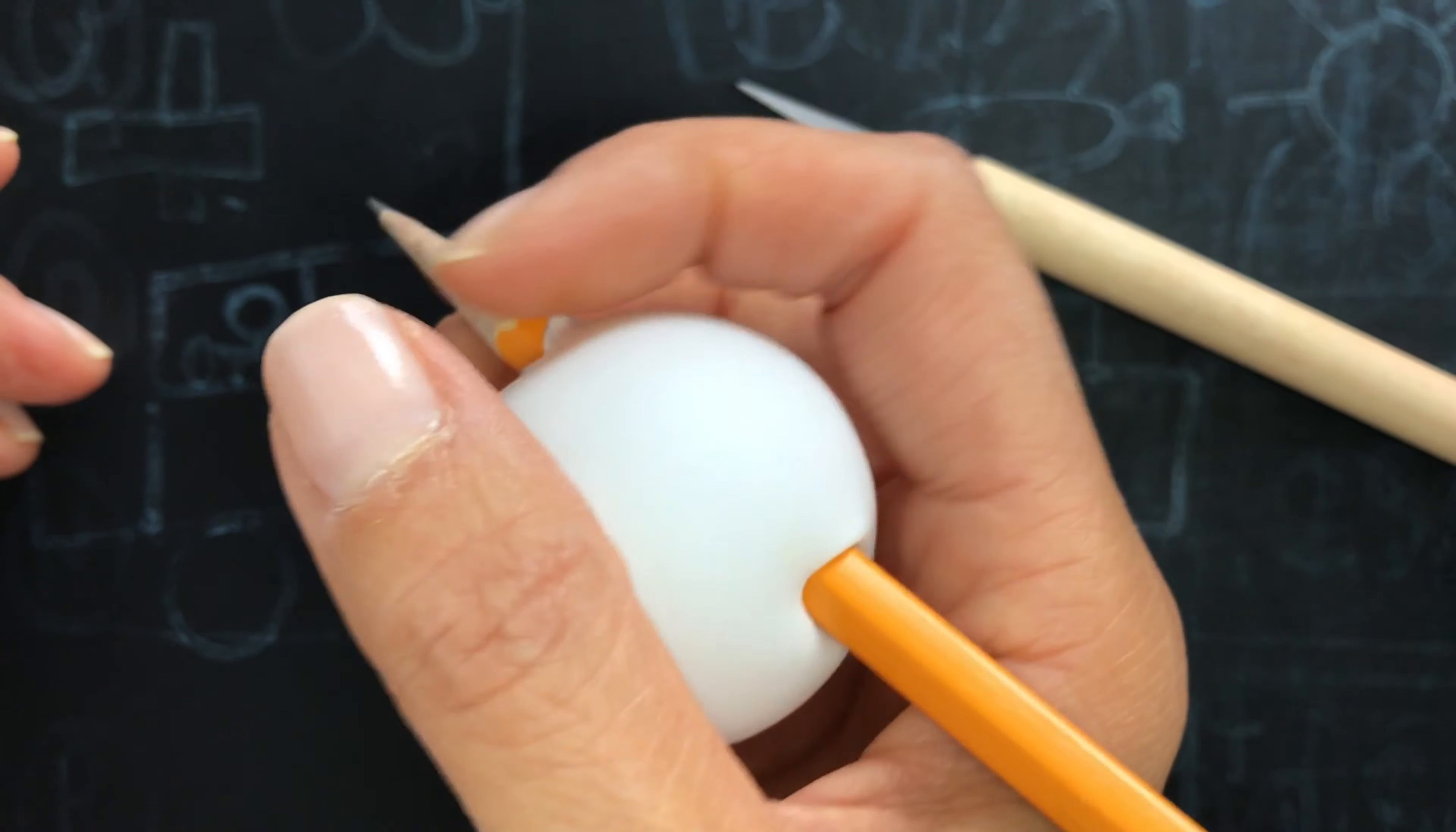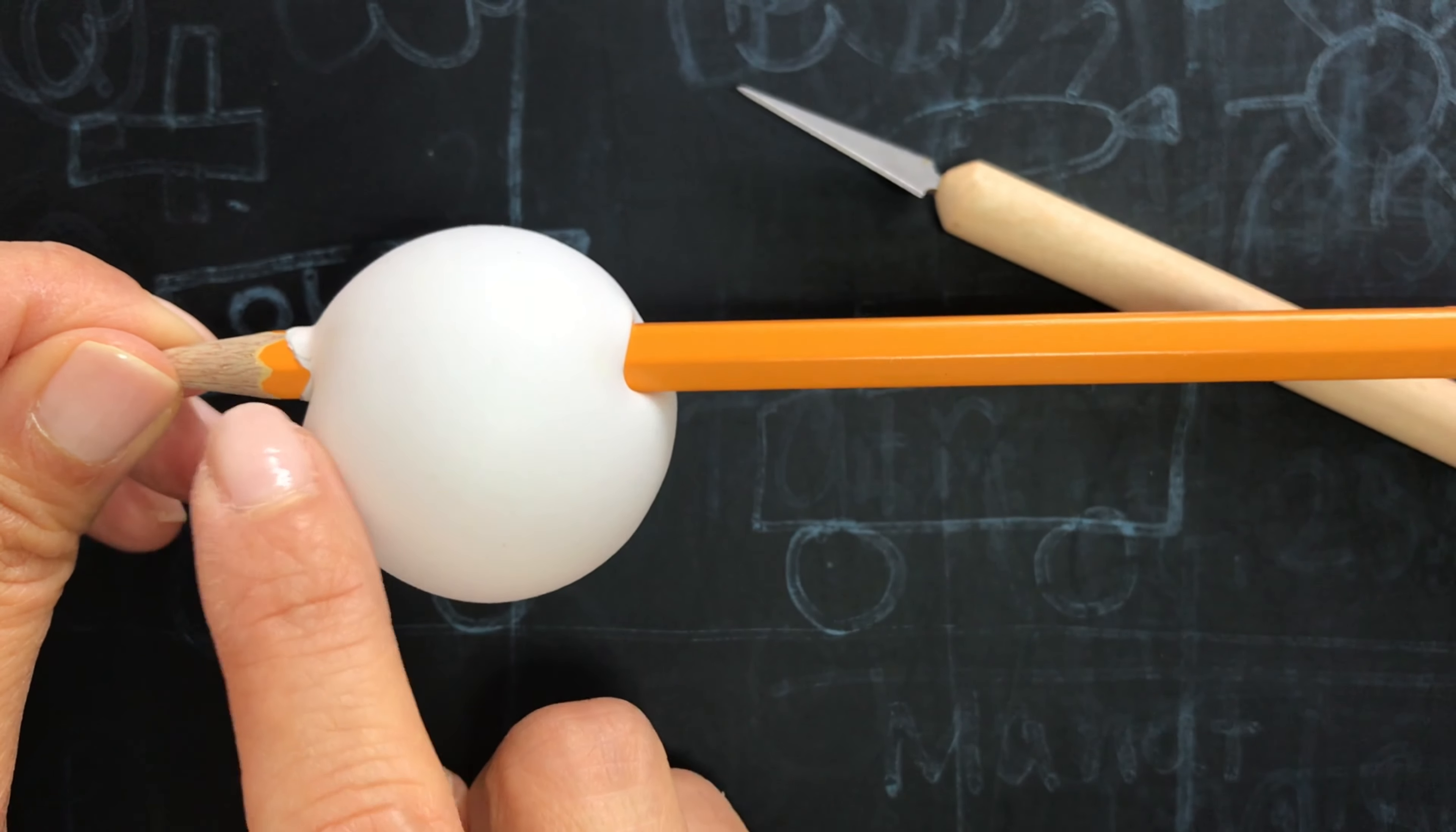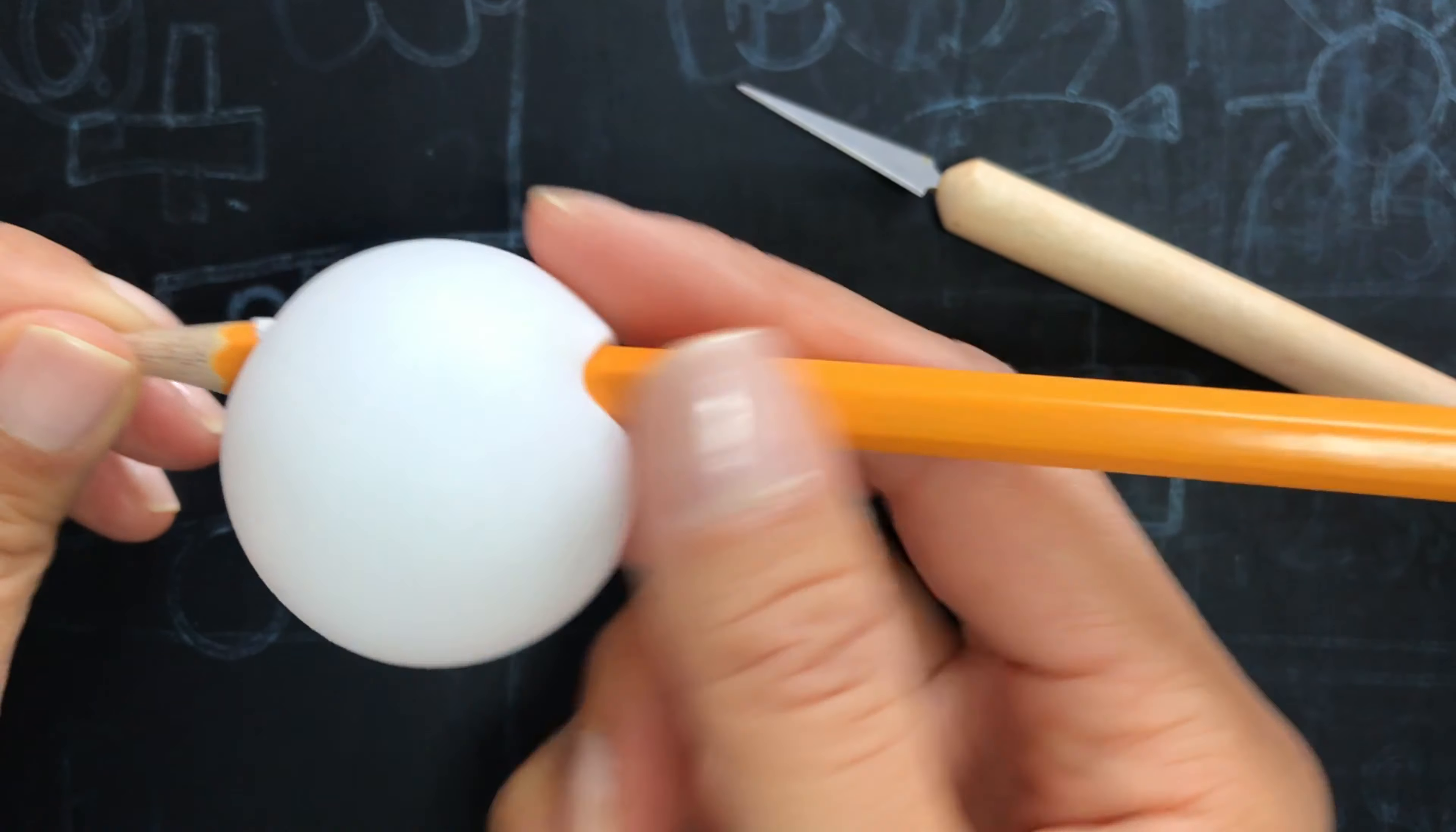Looks like this. Very simple. We just need to puncture two holes on the side and put the pencil through.